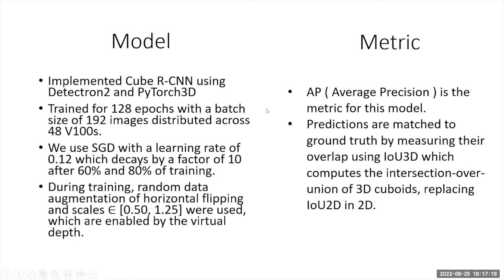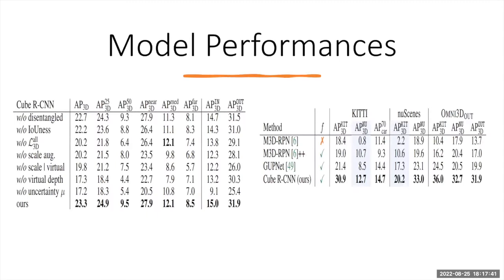For determining performance, we have taken average precision as the metric. The predictions are matched by measuring their intersection over union with the 3D cuboids by replacing the 2D.